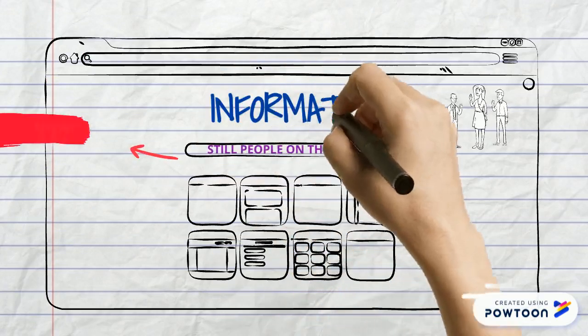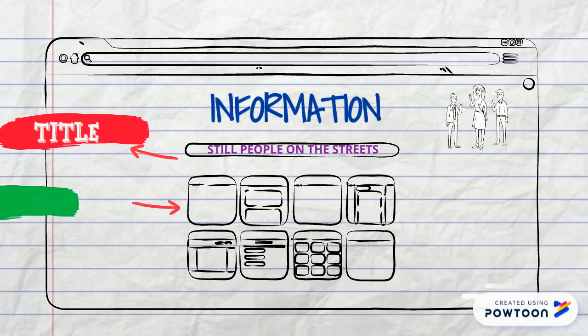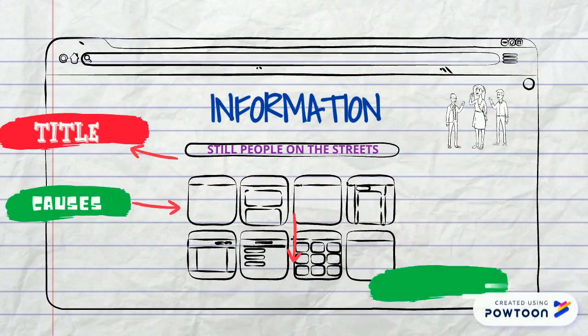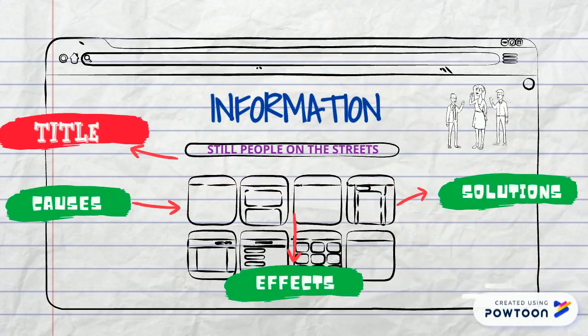We are going to focus our attention on information. We have the title, which is going to show what the problem is about. And then we are going to have three main pieces of information: causes, effects, and solutions.